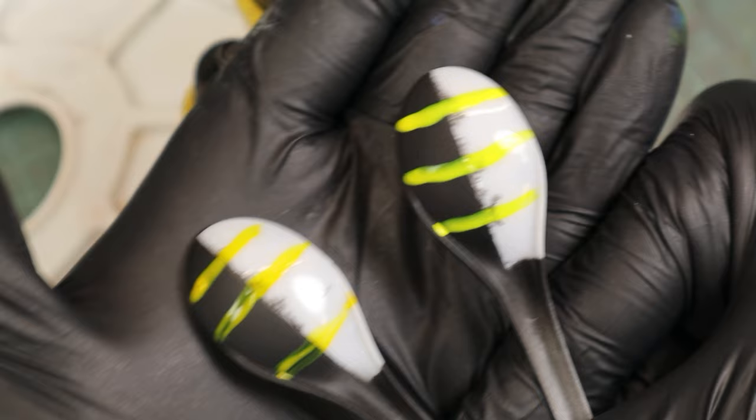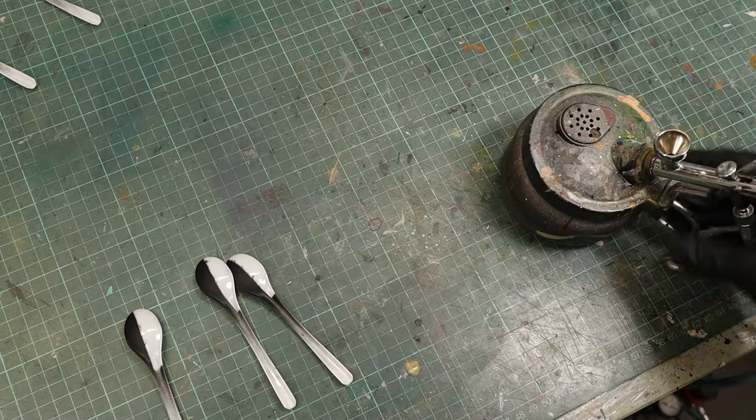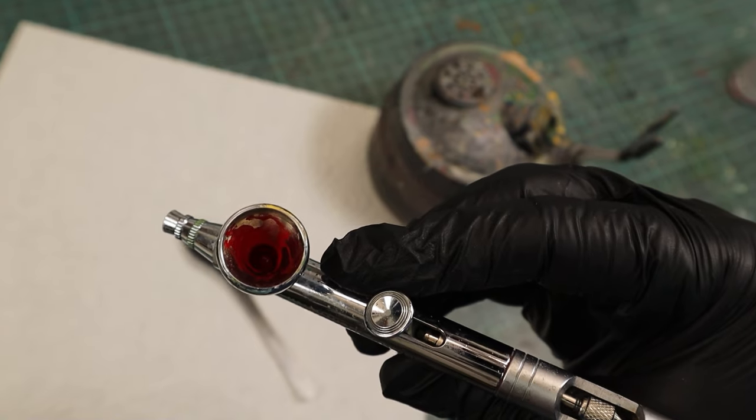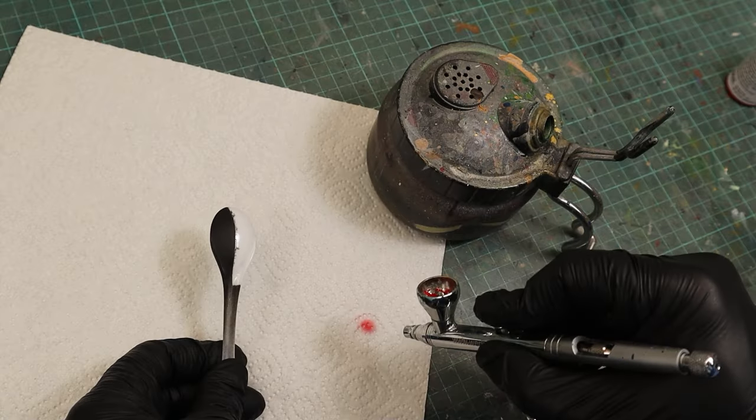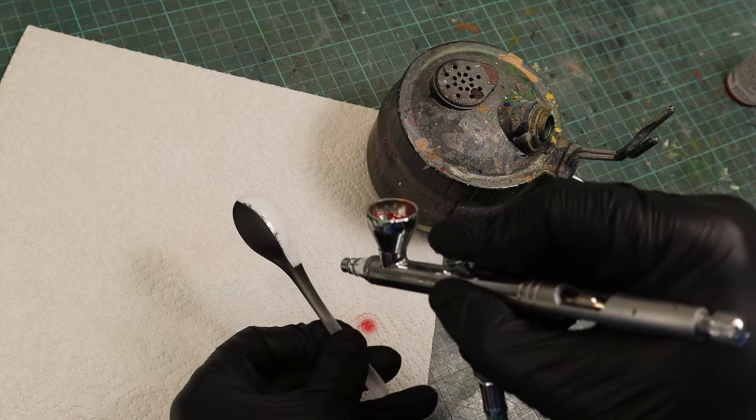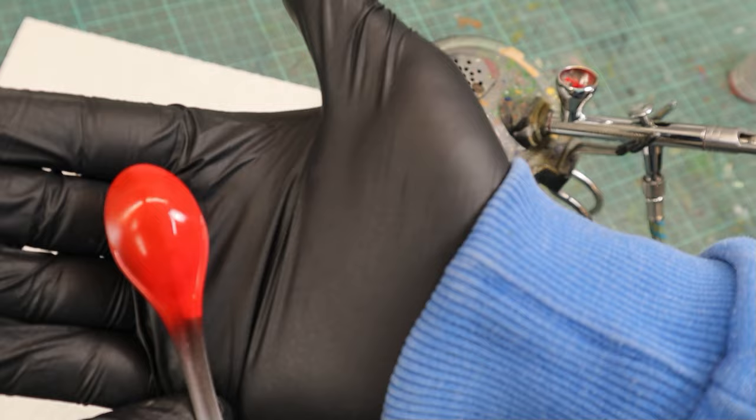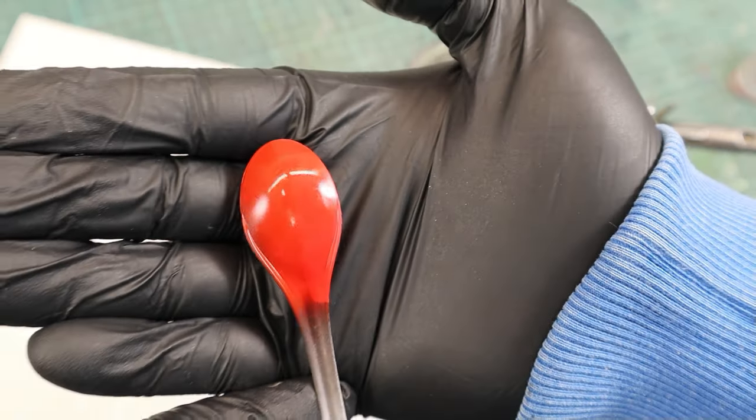But now let's grab the airbrush and let's see if we get a similar result there. We start with one drop of golden acrylic red to see how far we can go. And this one drop was enough to cover the whole spoon with an even layer. You can see a different tone of red between the two sides though.